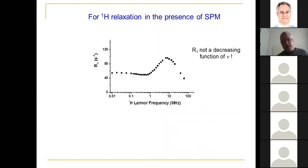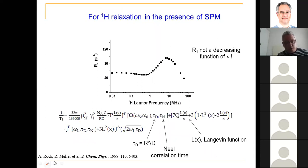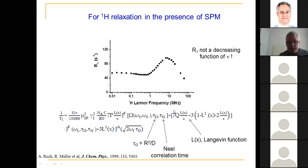The relaxation in the presence of superparamagnetic nanoparticles gives R1 as a non-decreasing function of frequency, which is surprising and suggests two mechanisms driving relaxation. Robert Muller and Alan Roch, 21 years ago, wrote out a theory that is still largely used today. The relaxation rate is a function of correlation times: τ_d, the Brownian correlation time relating to the distance of closest approach or diffusion coefficient, and the Néel correlation time for moment reorientation. A longitudinal function also appears in the formula.